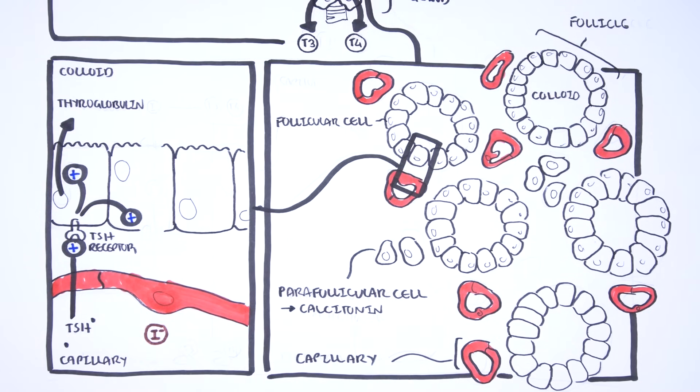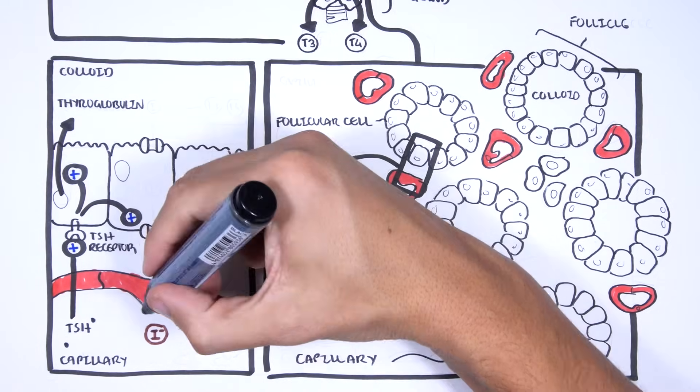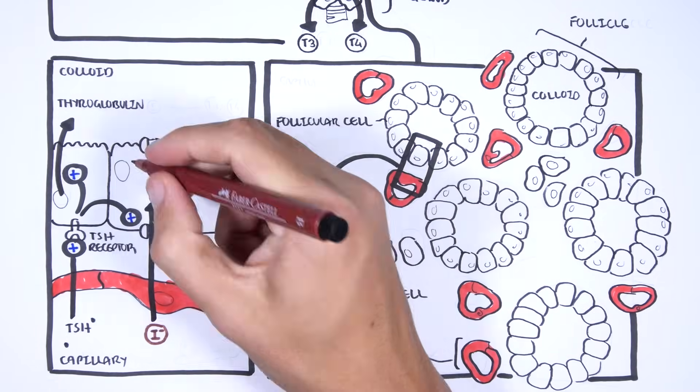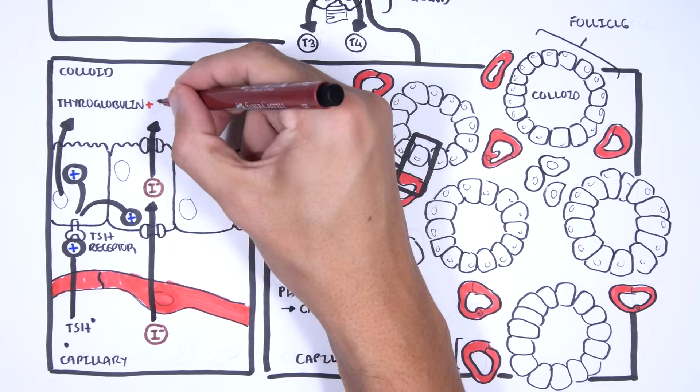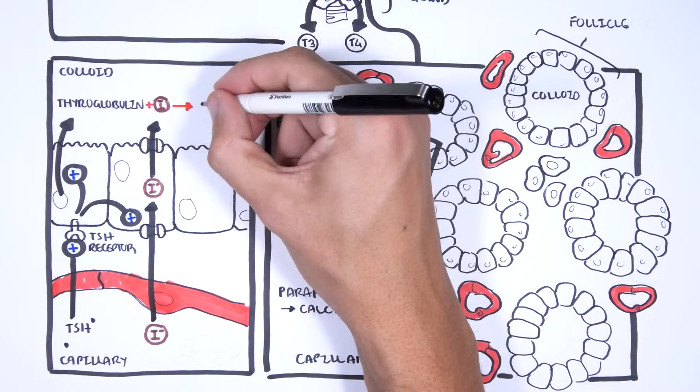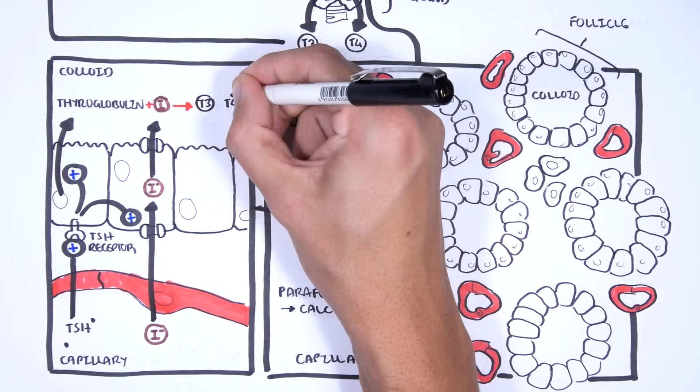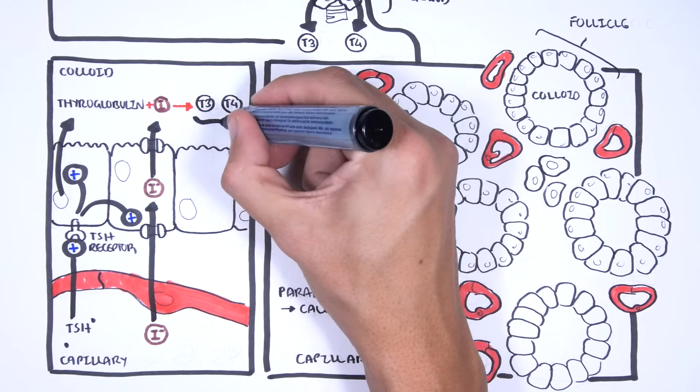TSH also stimulates the expression of channels, such as sodium iodide channels, allowing circulating iodide to enter the follicular cells. From here, iodide enters the colloid via another channel and becomes oxidized to iodine. Iodine and thyroglobulin is what makes our thyroid hormones, T3 and T4.